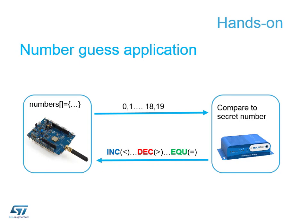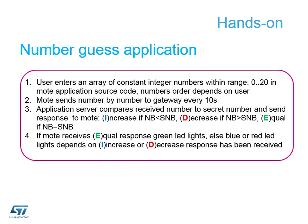We will have programmed into our discovery board an array of numbers somewhere between 0 and 19, and we will be sending these numbers out at a defined interval to our gateway. The gateway will then do a comparison and send a response back to our node, and one of the LEDs — blue, red, or green — will light up depending on the response from the gateway.